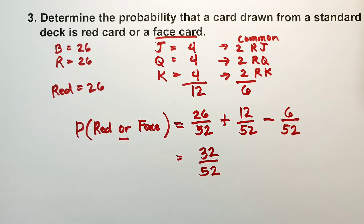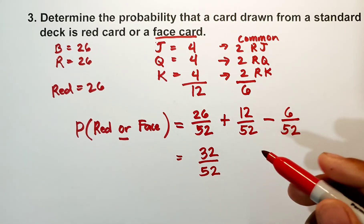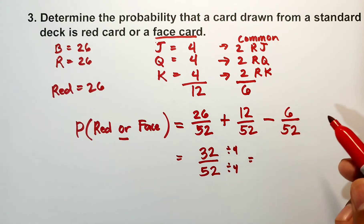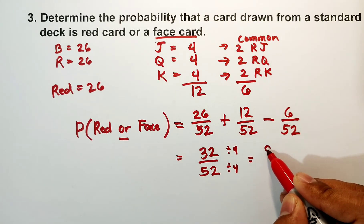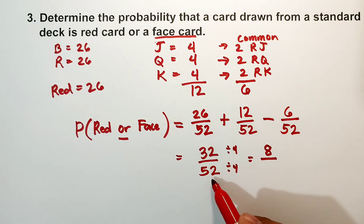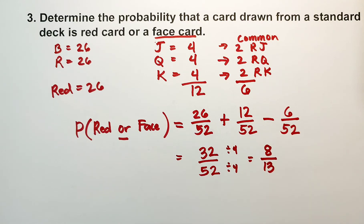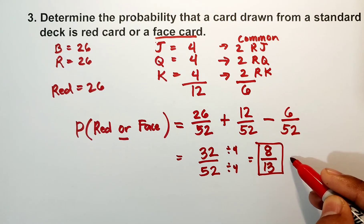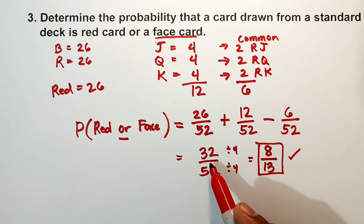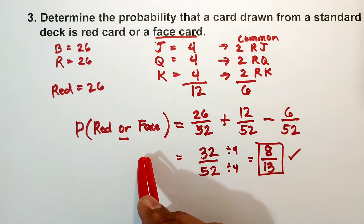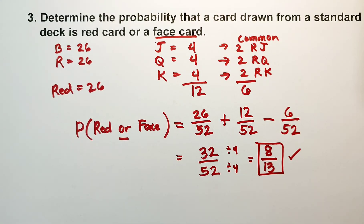Simplifying 32 over 52 — both are divisible by 4. 32 divided by 4 is 8, and 52 divided by 4 is 13. So our final answer is 8 over 13. The probability of getting a red card or a face card is 8 over 13. I hope you learned from this video — if you did, please subscribe to the channel.